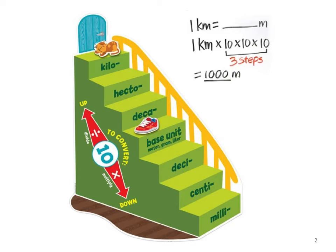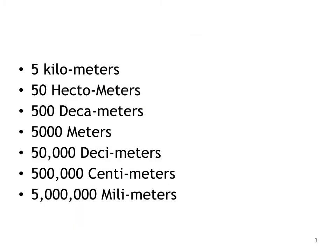Each time you move a step, you either divide by 10 if you're going up, or multiply by 10 if you're going down. Here's a little example: if we start with 5 kilometers — I use meters because it's what I deal with most as a track coach, and I'm sure you've all heard of a 5K, that's a 5 kilometer race.